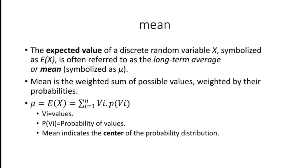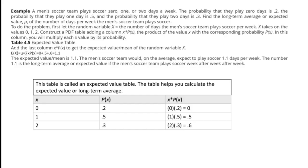Mean is the weighted sum of possible values weighted by their probabilities. Now I will explain with an example. The example is to find out the mean, that is the long-term average, considering an example of a men's soccer team. The soccer team plays soccer zero, one, or two days a week.